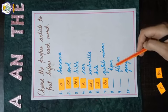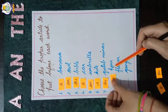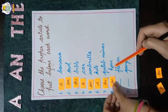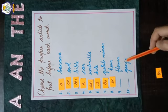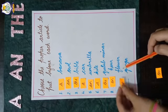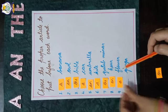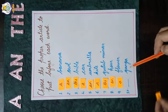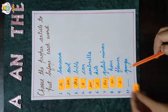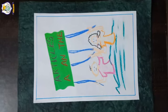'Hour' — vowel sound as we discussed, so 'an hour'. 'Flower' — consonant sound 'f', so 'a flower'. 'Ganga' — it is a famous river, so 'the Ganga'.